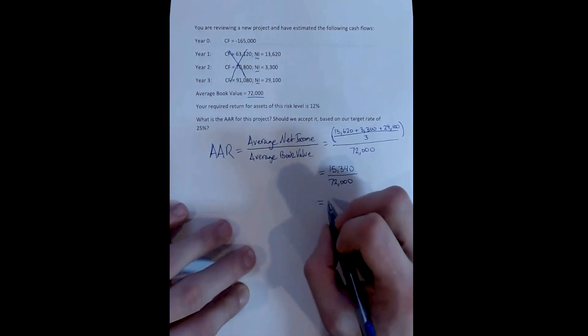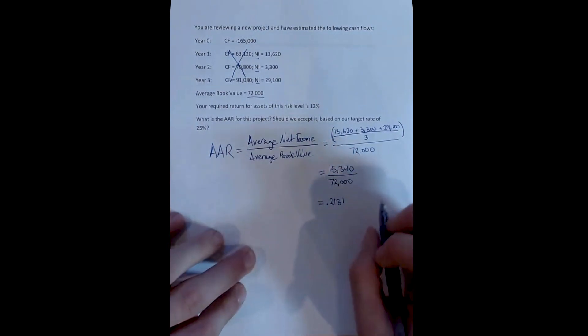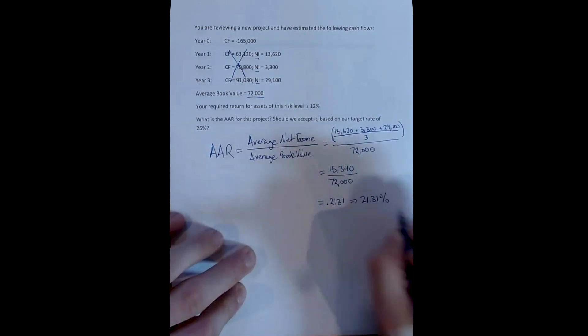And we get an Average Accounting Return, or AAR, of 0.2131, or 21.31%. Remember, this is a return.